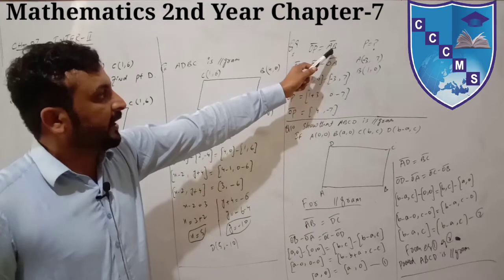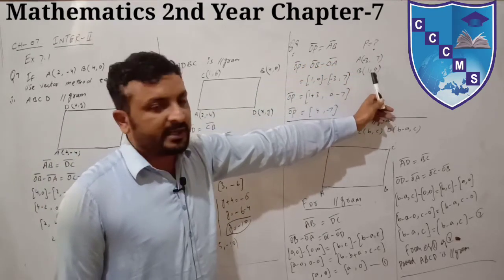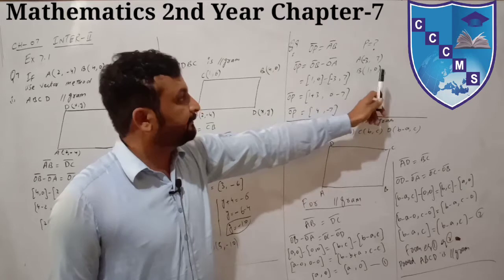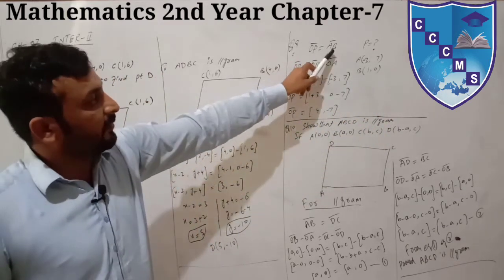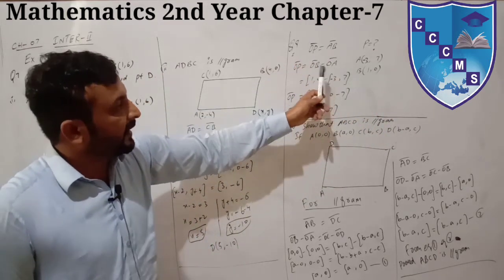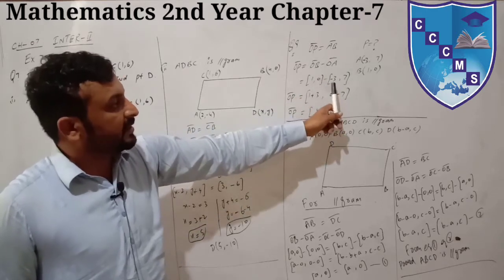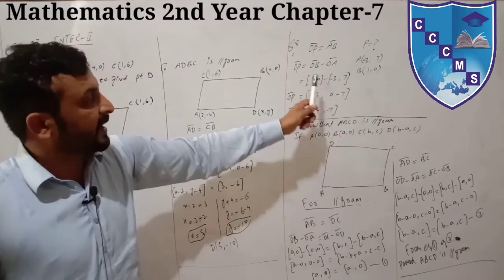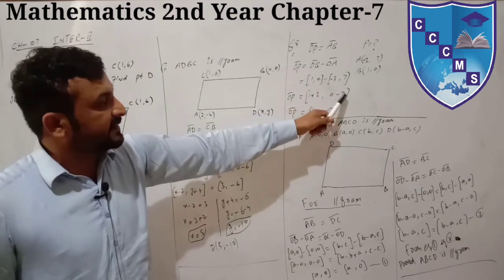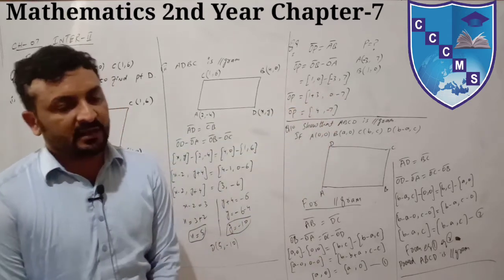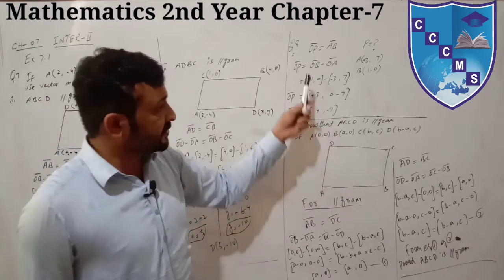Question 9: OP equals AB. You have to find point P. A and B are given. Apply the formula: OP equals OB minus OA. Put in the value of OB as (1, 0), and OA as (minus 3, 7). So: 1 minus (minus 3) equals plus 4, and 0 minus 7 equals minus 7. The answer for P is (4, minus 7). This was a short question.